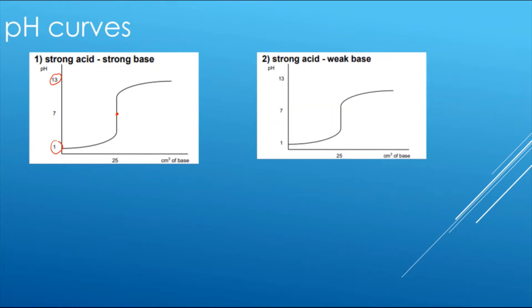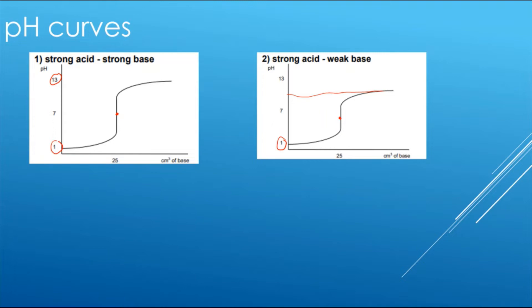For a weak base being added to a strong acid, we still start with a very low pH of around 1 to 2. But because it's a weak base, we finish around 10 to 12 — anything above 7 could indicate a weak base, but here it looks like around 10. The neutralization would occur below pH 7 because we have a strong acid.